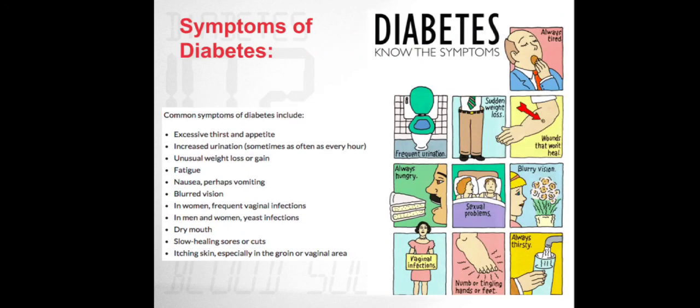The most common symptoms of diabetes include excessive thirst and appetite, increased urination sometimes as often as every hour, unusual weight loss or gain, fatigue, nausea, perhaps vomiting, and blurred vision. In women, frequent vaginal infections; in men and women, yeast infections. Other symptoms include dry mouth, slow-healing sores or cuts, and itching skin especially in the groin or vaginal area.